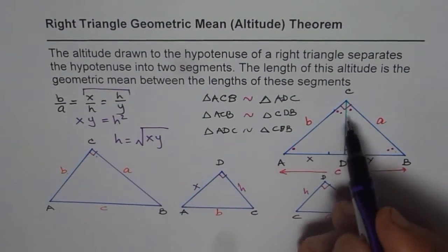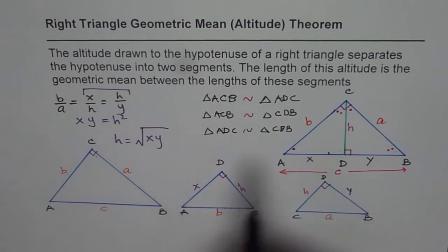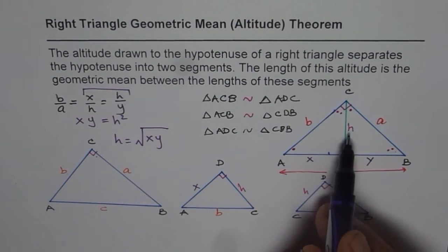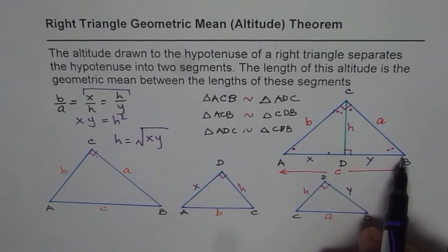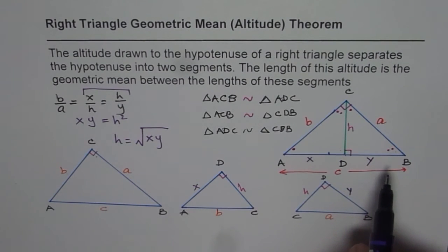So the altitude, which is H, is the square root of the product of X and Y. It is the geometric mean of these two segments. So that is what Right Triangle Geometric Mean is.